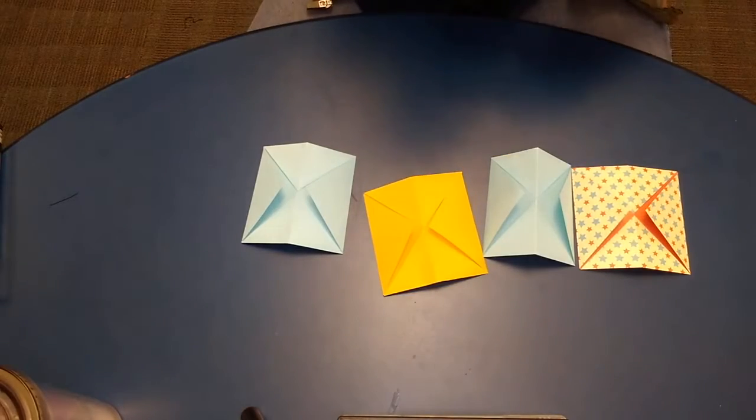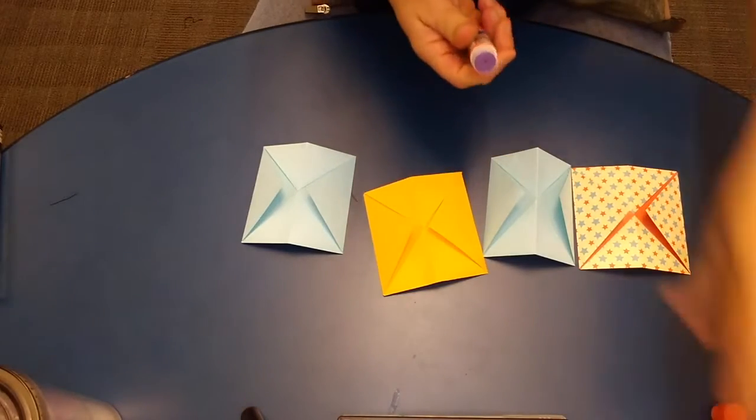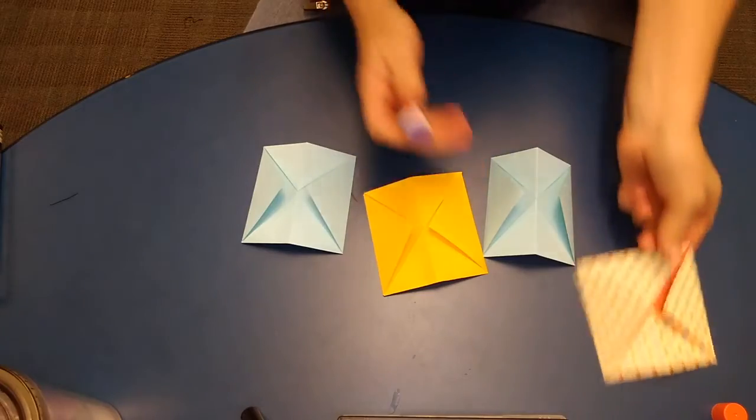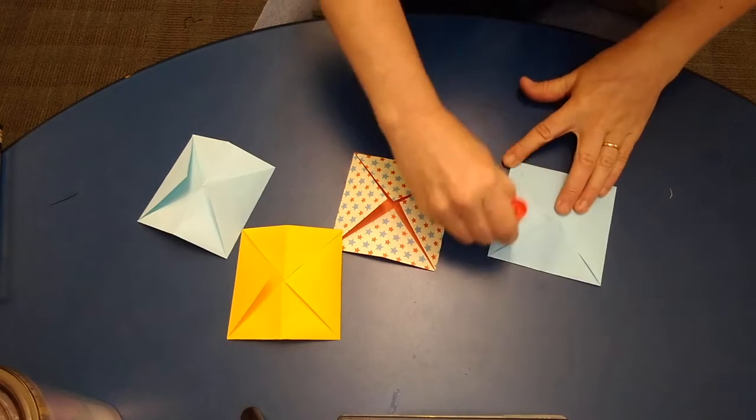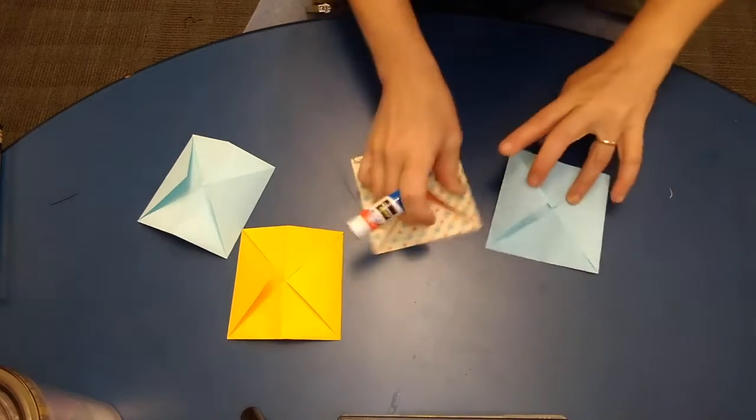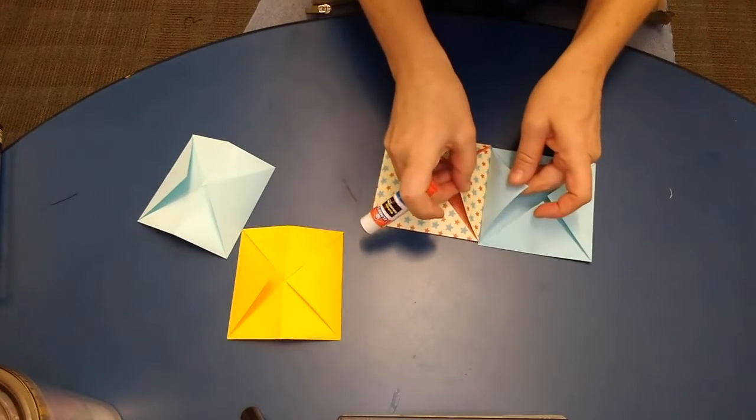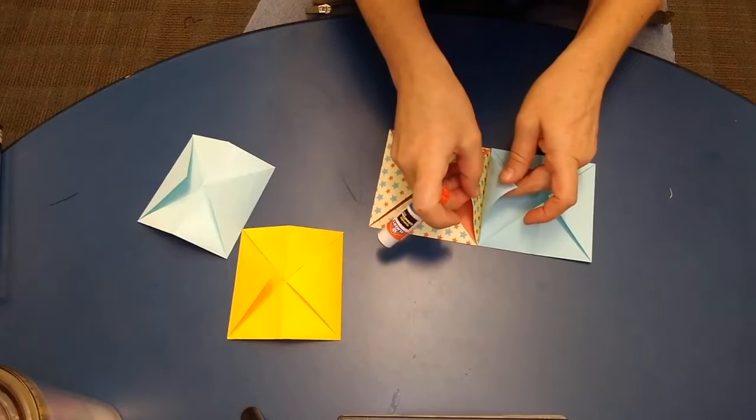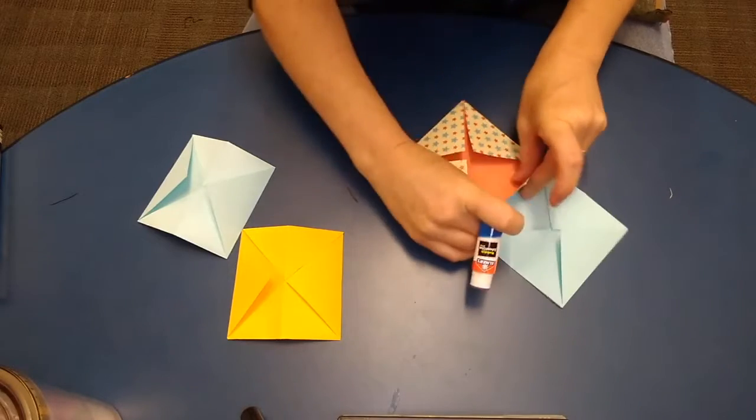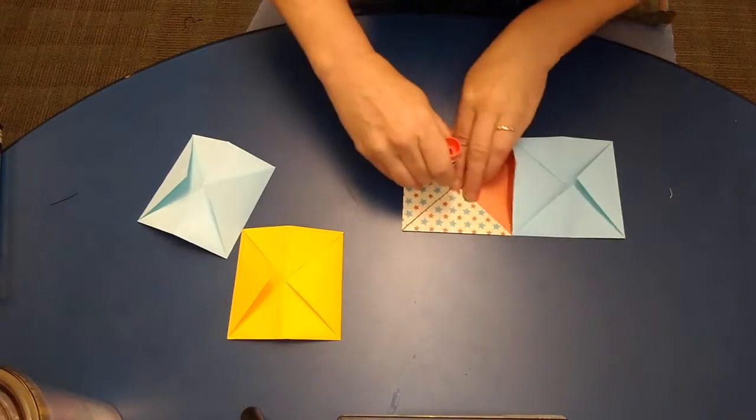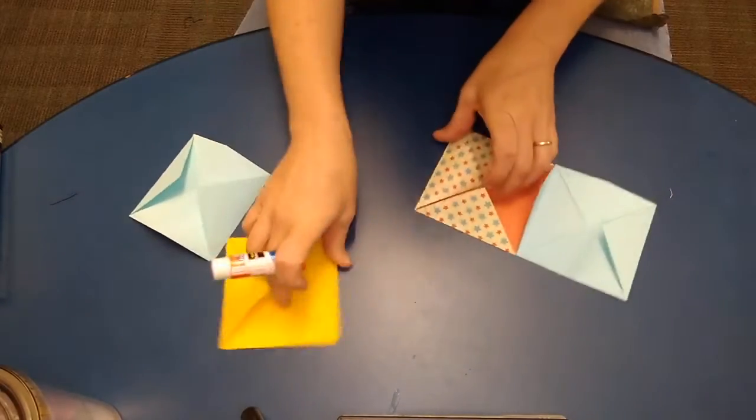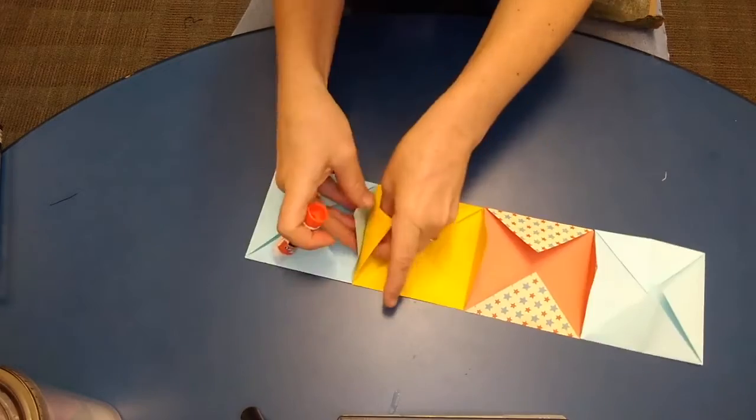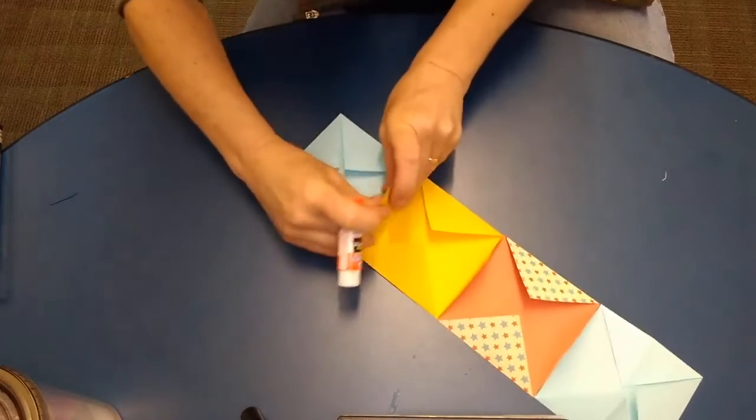When you've done that, we're going to glue the pieces of paper together by meeting their triangles like this. There.